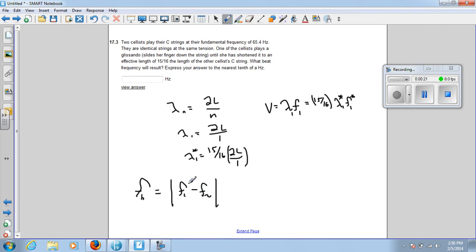So if one string is plucked at 65.4 hertz and another one is plucked at 66.4 hertz, you'll hear a beat frequency of 2 hertz. Or if one is 65.4 and the other one is 63.4 hertz, again, the beat frequency will be 2 hertz.